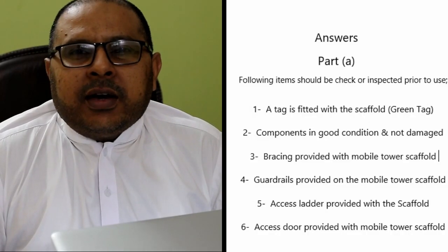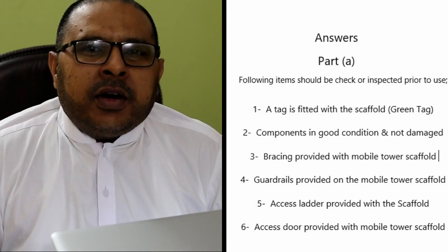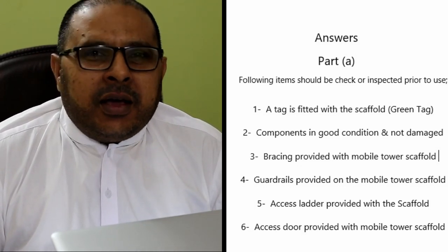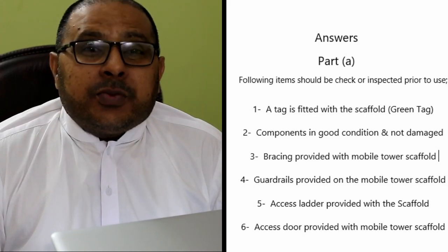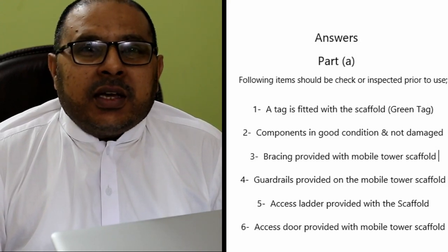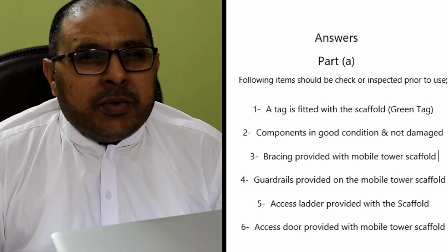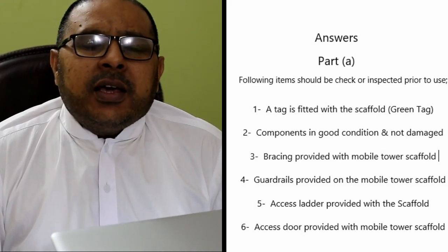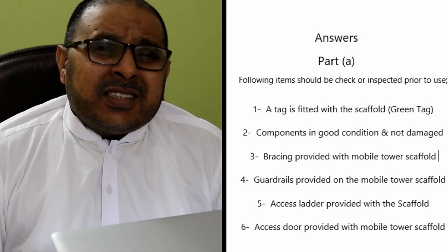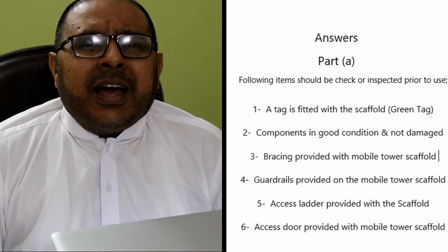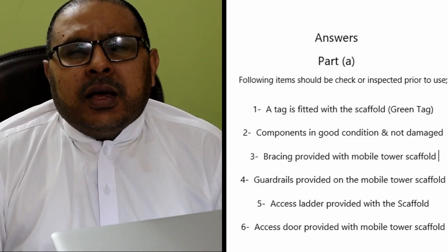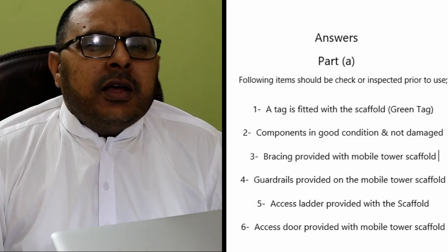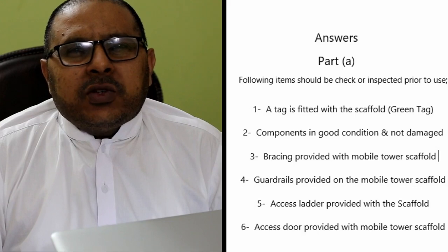According to the question, what checks can be done and what things will you inspect prior to use for a mobile tower scaffold? The first thing is that we can look at whether a green tag has been applied — an inspection tag by the inspector — so that you know if it is in good condition. You can also check components for damage, guard rails or railings on the mobile tower scaffold, the access ladder, the access door, and the bracing and overall condition of the scaffold. So you have four different items which need to be checked prior to use.